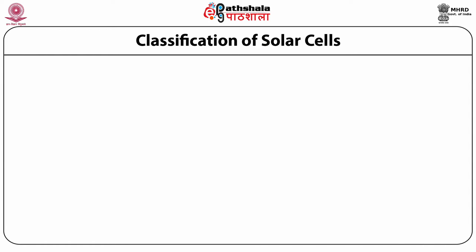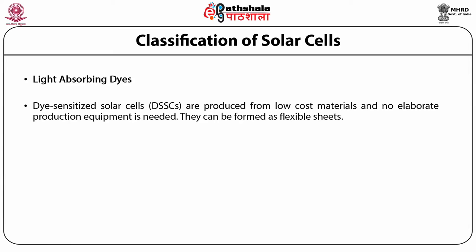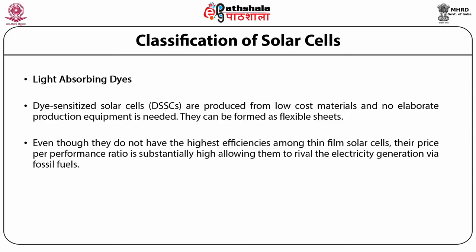The next material attractive for solar cells is light absorbing dyes. Dye-sensitized solar cells are produced from low-cost materials and no elaborate production equipment is needed. They can be formed as flexible sheets. Even though they do not have the highest efficiencies among thin film solar cells, the price-per-performance ratio is substantially high, allowing them to rival electricity generation via fossil fuels.